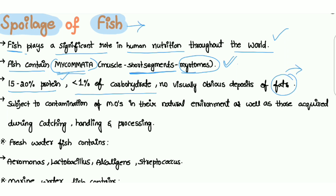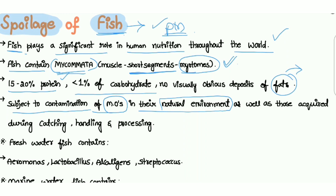Fish is subject to contamination of microorganisms in their natural environment, as well as those acquired during catching, handling, and processing. Contamination can occur during catching, during handling, during processing, and also in their natural environment.